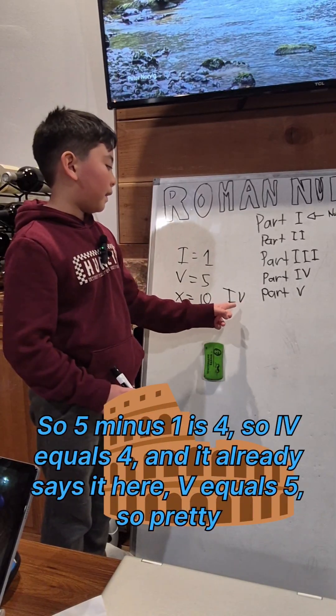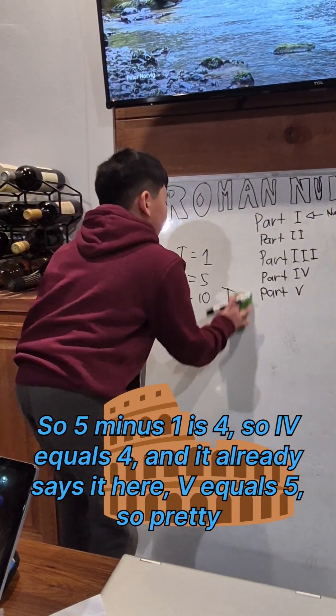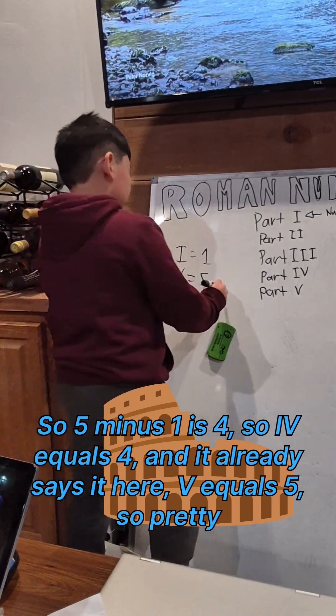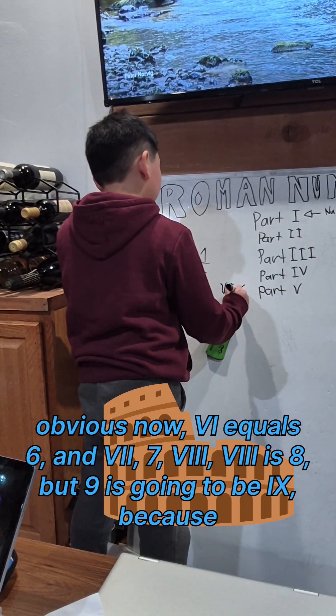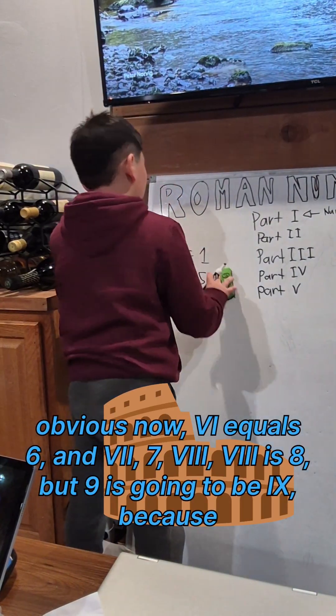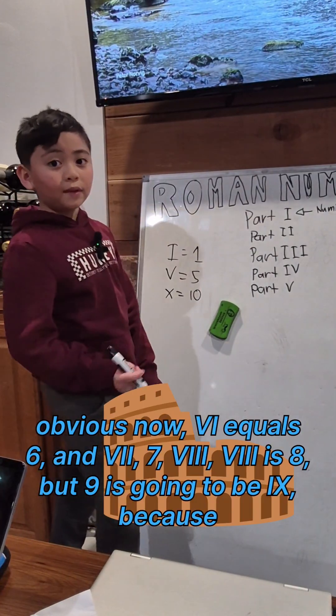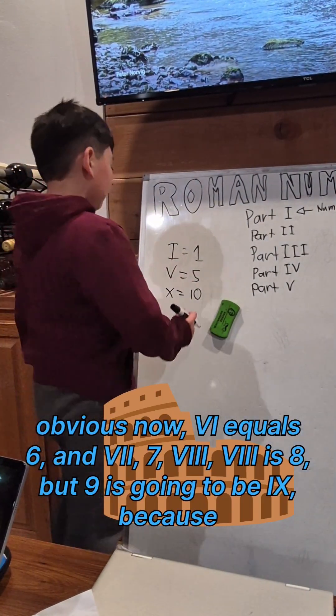It already says here V equals 5, so pretty obvious. Now VI equals 6, VII is 7, VIII is 8. But 9 is going to be IX.